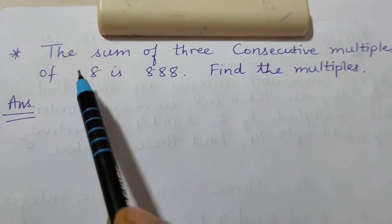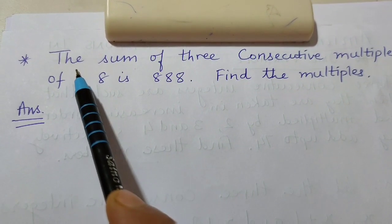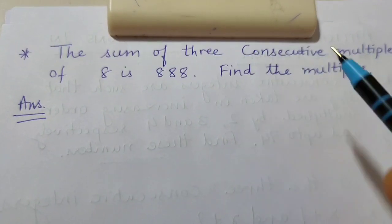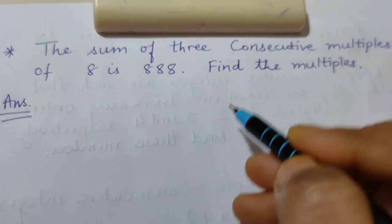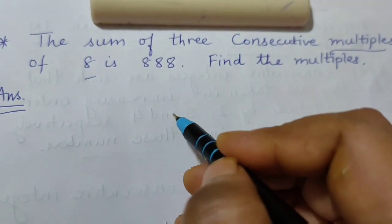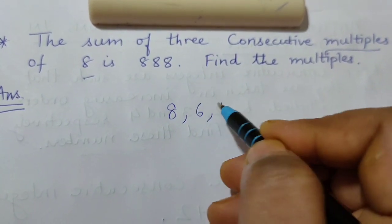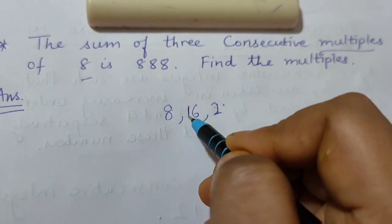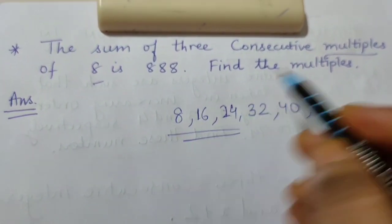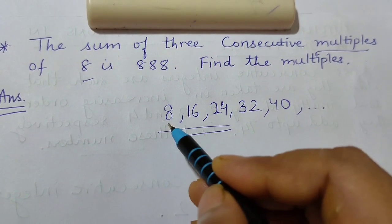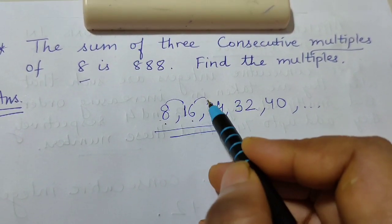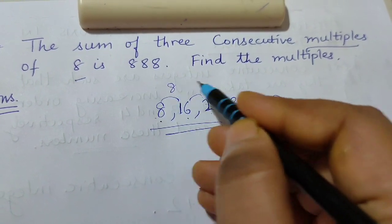The next question is also on applications. The sum of three consecutive multiples of 8 is 888. Multiples of 8 are numbers in the table of 8: 8, 16, 24, 32, 40, and so on. The difference between consecutive multiples of 8 is always 8, since each multiple is 8 more than the previous one.